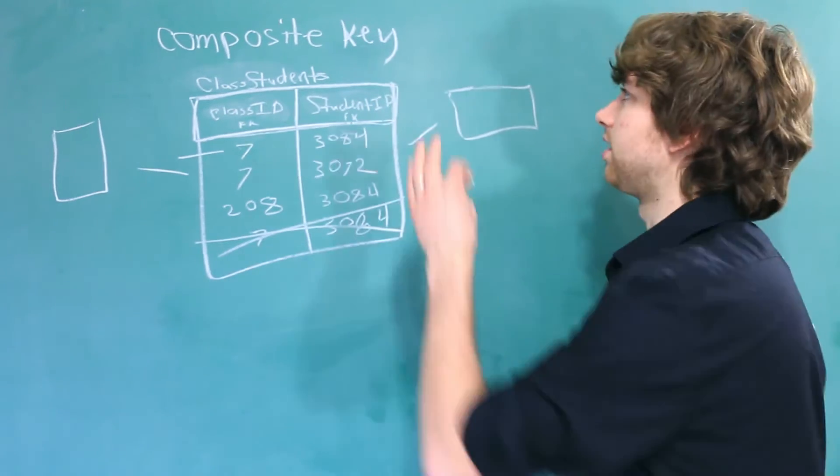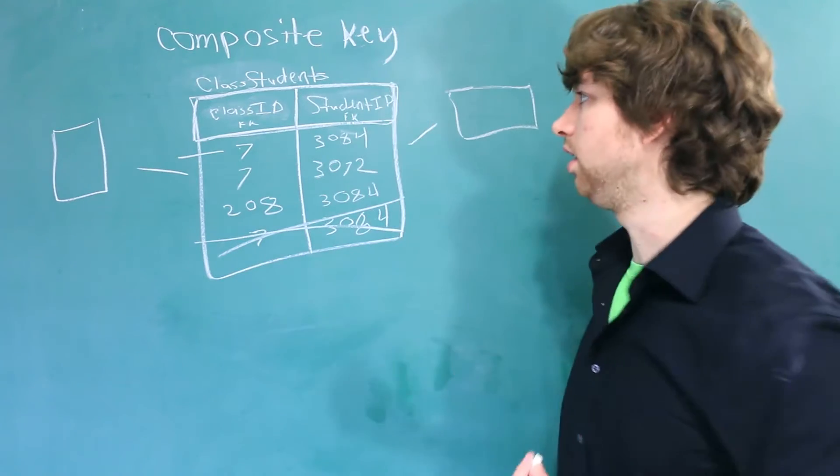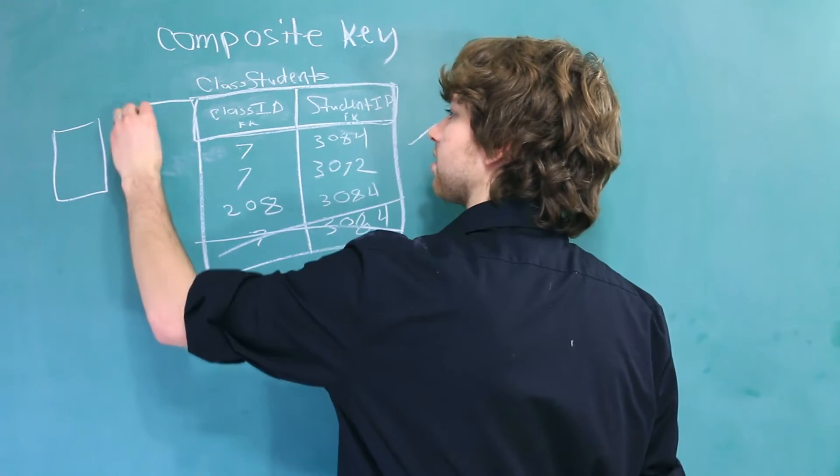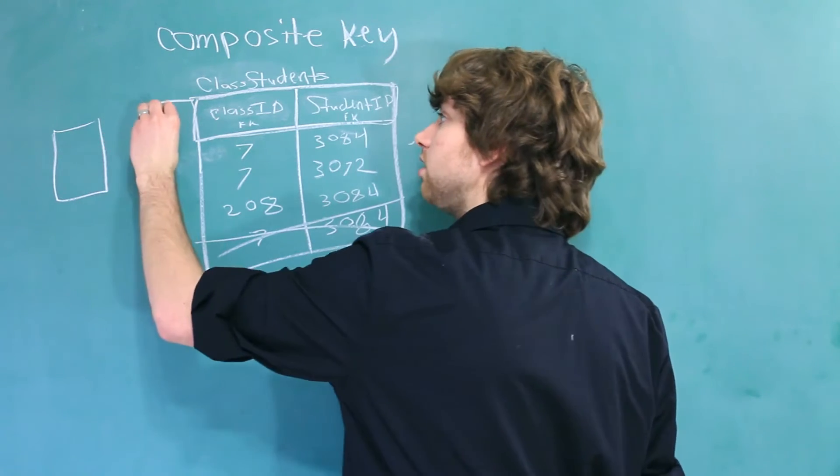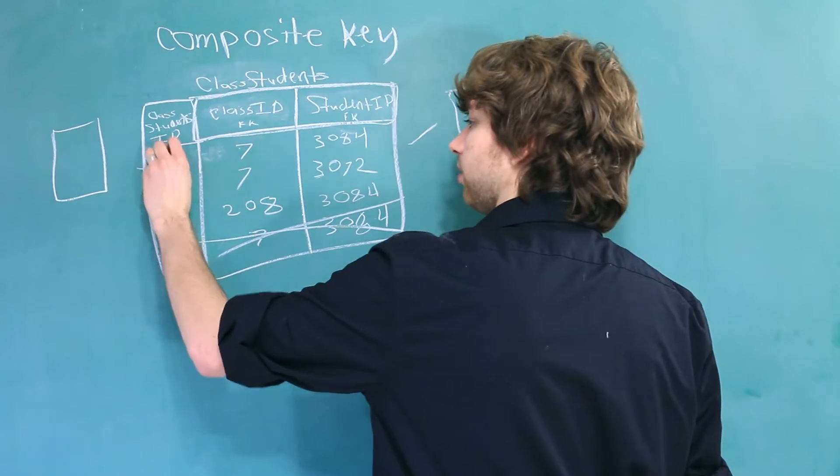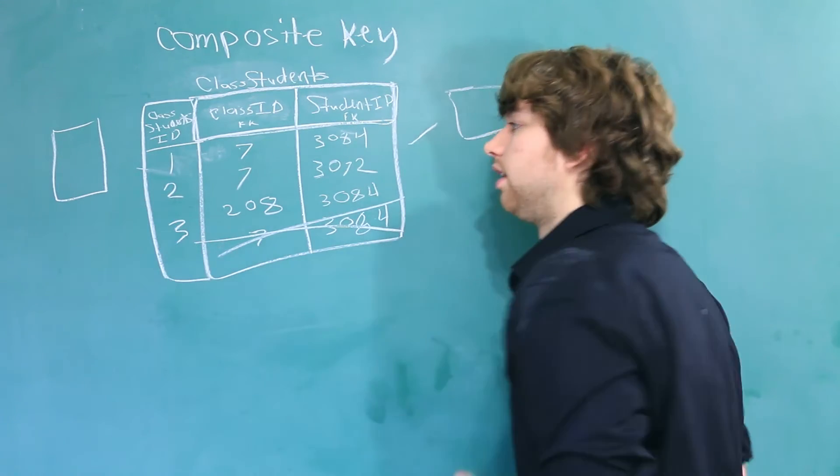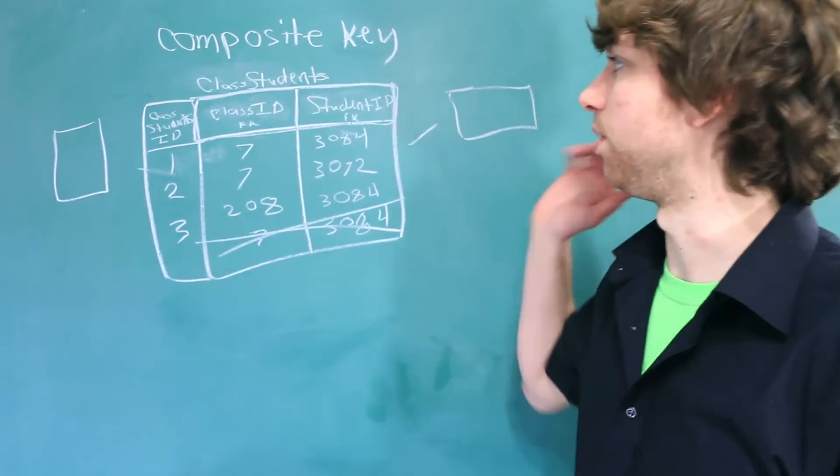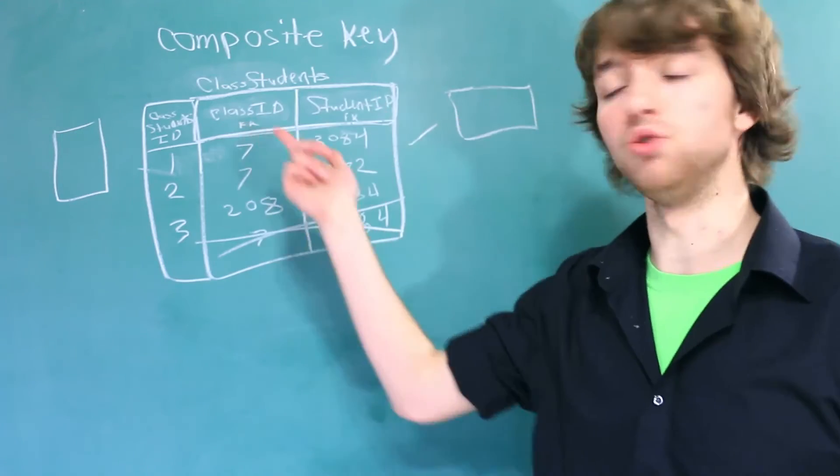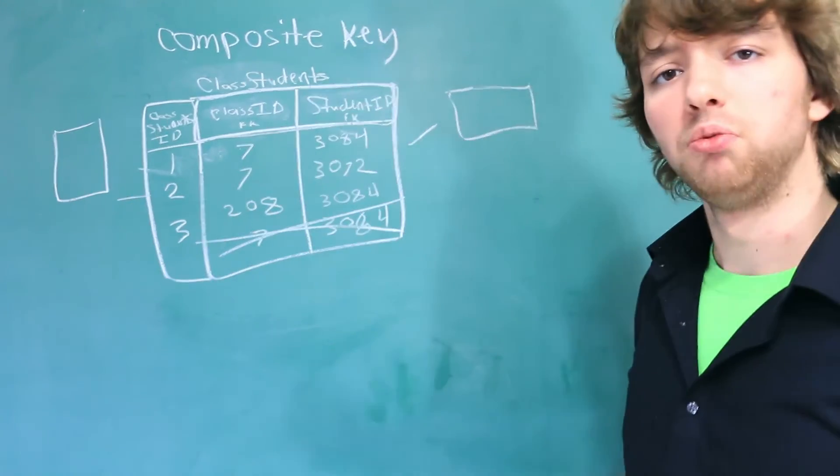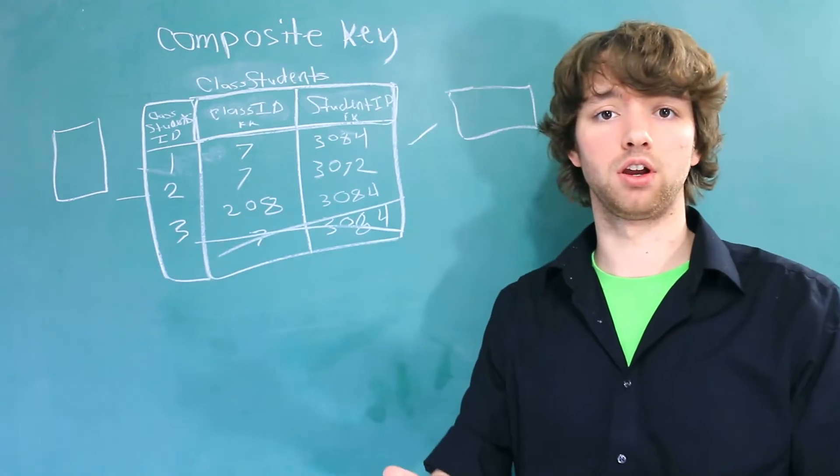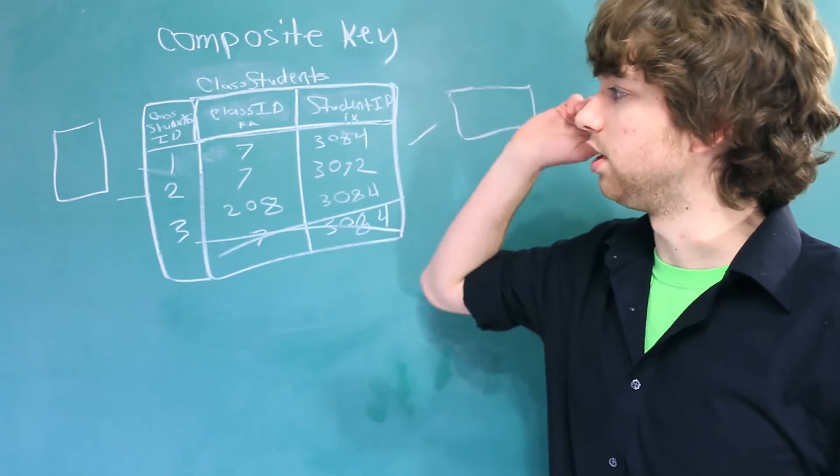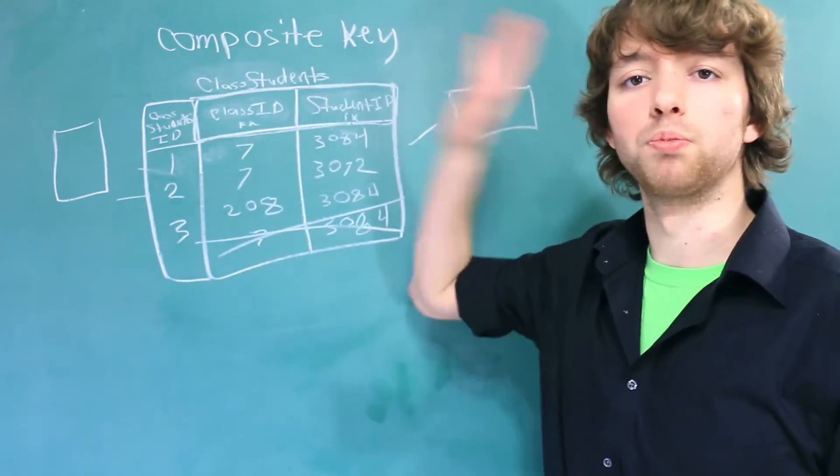Now you might also be asking, is it really necessary to use a composite key? Couldn't we just have another column right here and make it something like class students ID? And then every single row would have a new ID, so we'd have 1, 2, 3. And then you wouldn't need to say 2, you could just say 1. Grab me the row with the class student ID of 2, and you would know it's always talking about this row. Well, actually, that does work. Some people actually prefer that. In this situation, you wouldn't be using a composite key. You would just be using a single primary key, and it would work just fine.